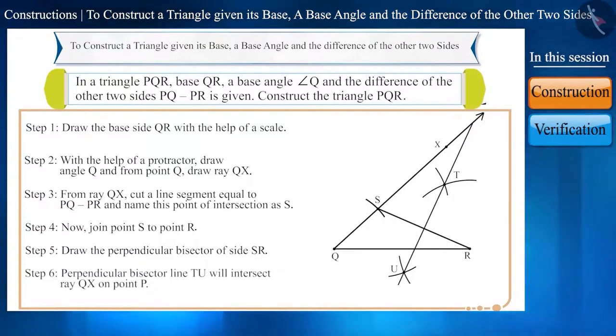Step 6. We can see that the perpendicular bisector line TU is intersecting ray QX, and we will represent this point of intersection as P.